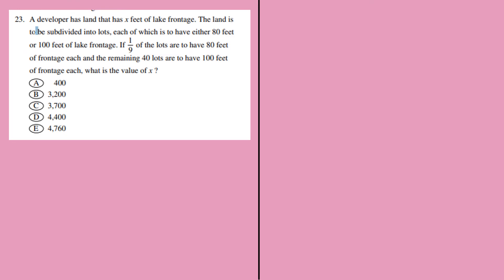The next question: a developer has land that has X feet of lake frontage. The land is to be subdivided into lots, each of which has to be either 80 feet or 100 feet in the frontage. So one length of the lots are to have 80 feet of frontage, and the remaining 40 lots are to have 100 feet of frontage.